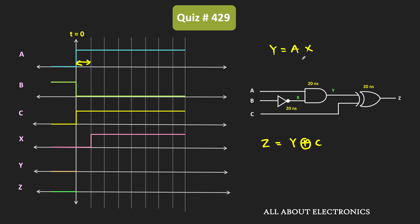Since y equals A·x, and from the diagram as you can see, up to 20 nanoseconds x is equal to 0, so output y will remain 0. But after that, since both A and x are equal to 1, output y will also become 1. However, because of the propagation delay of the AND gate, it will respond to that input change just after 20 nanoseconds — meaning overall, after 40 nanoseconds, this output y will become 1.